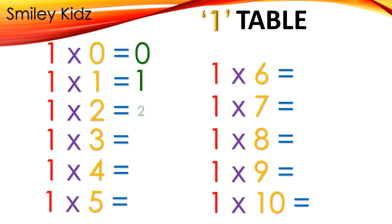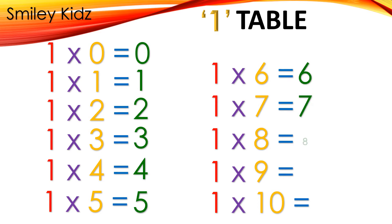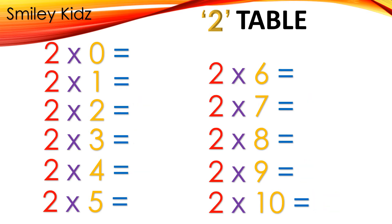Table 1: 1×0=0, 1×1=1, 1×2=2, 1×3=3, 1×4=4, 1×5=5, 1×6=6, 1×7=7, 1×8=8, 1×9=9, 1×10=10.